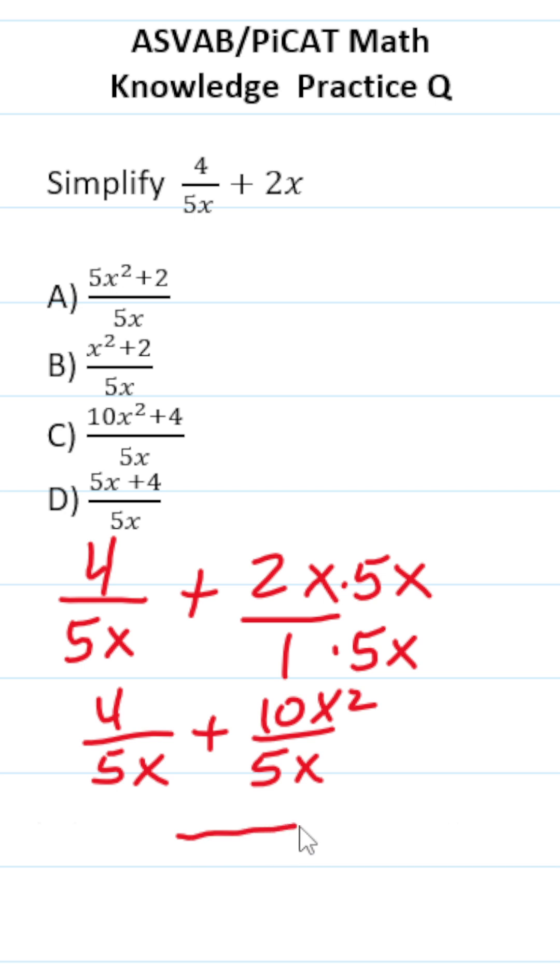Now that these have the same denominator, we can write our answer. This 10x squared is going to come first plus 4. So just like that, this one is 10x squared plus 4 over 5x, which is answer choice C.